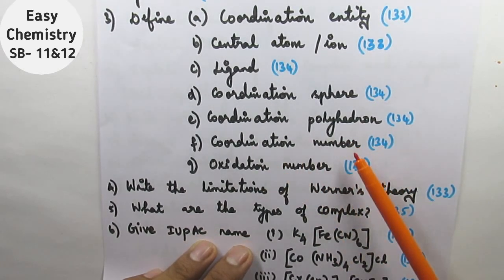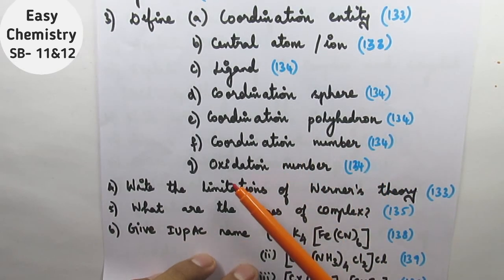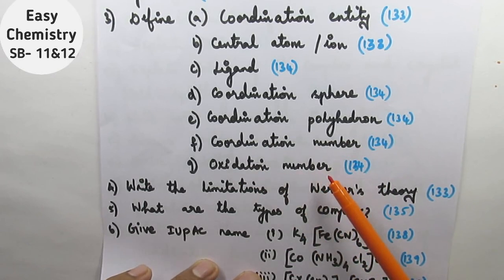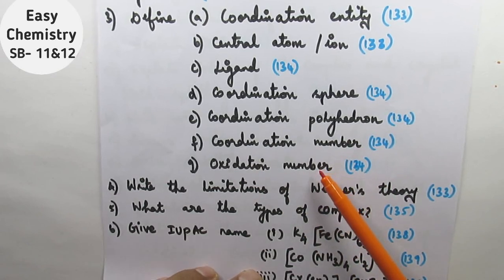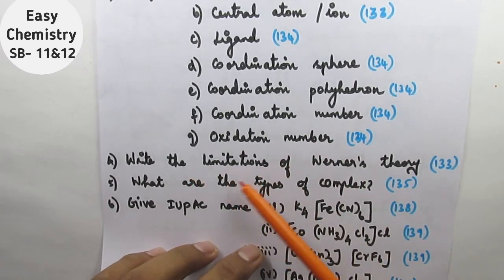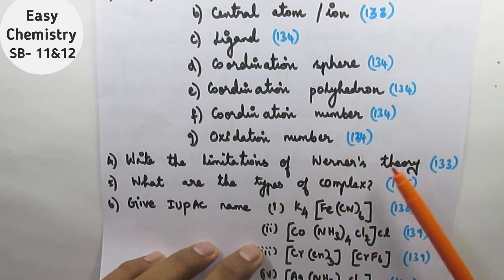What is coordination number? What is oxidation number — what is oxidation state? Write the limitations of Werner's theory.